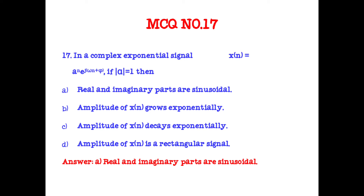For a complex exponential signal x(n) = a^n · e^(jωn + φ), if the modulus of a equals 1, then its real and imaginary parts are sinusoidal. Substituting |a| = 1 gives 1^n = 1, so e^(jωn + φ), and since e^(j·) gives cosine and sine values, the real and imaginary parts are sinusoidal.